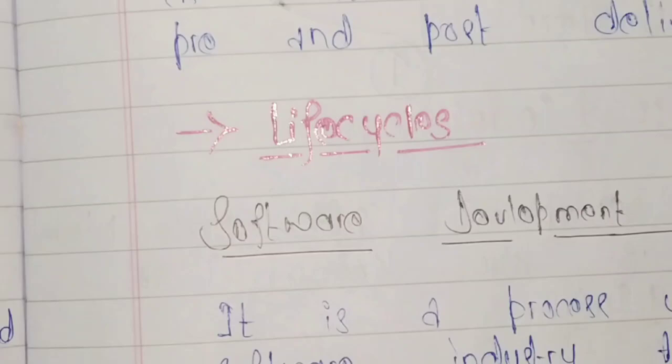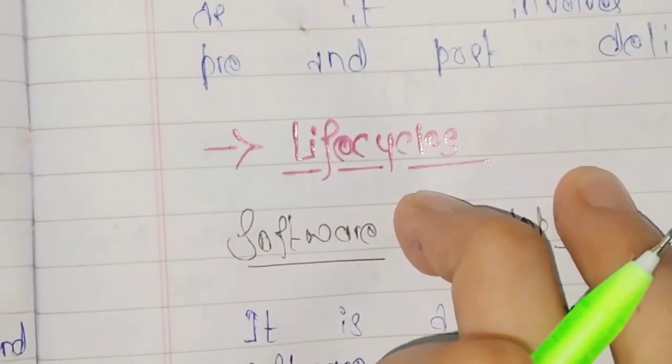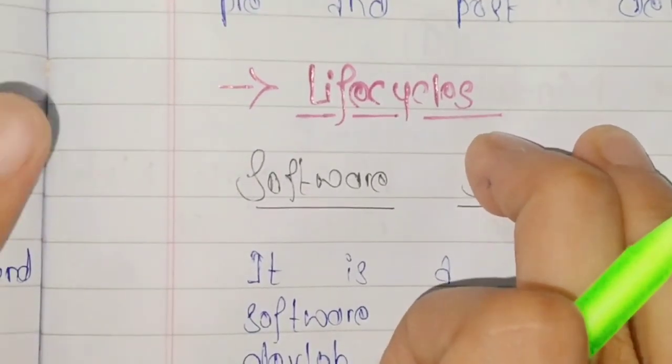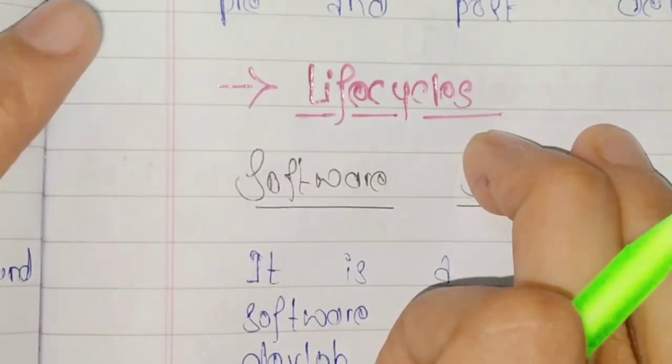So now let's start with the next topic of our life cycle. Life cycle plays a major role in software engineering. It gives us a basic structure in which we can prepare a new process model.